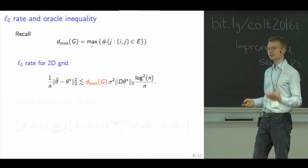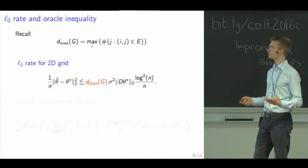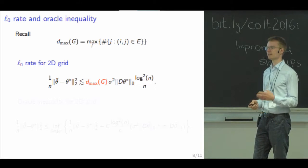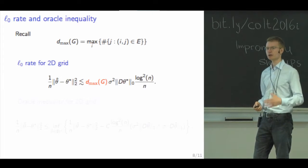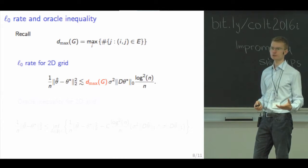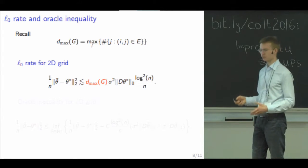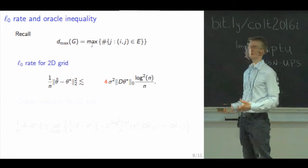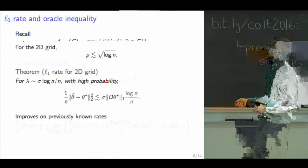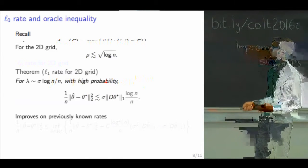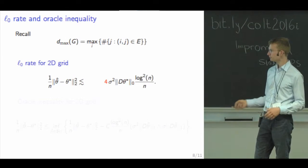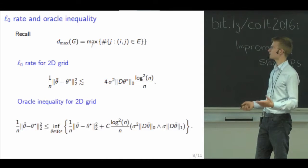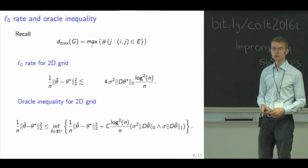We can also get an L0 rate for any graph by introducing an additional factor bounded by the maximum degree of the graph. In the case of the grid that's just four, so we still get a fast L0 rate, and moreover we can combine this into an oracle inequality.